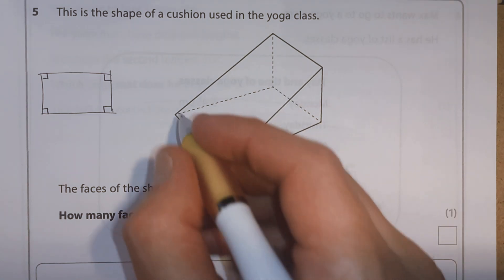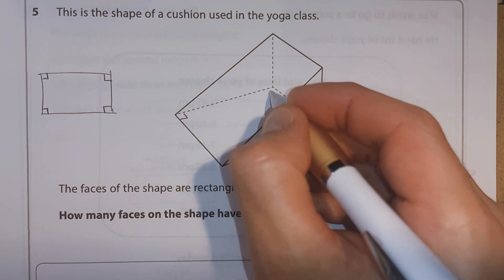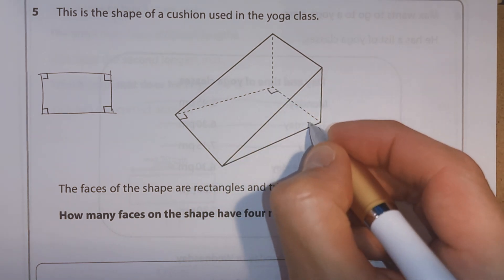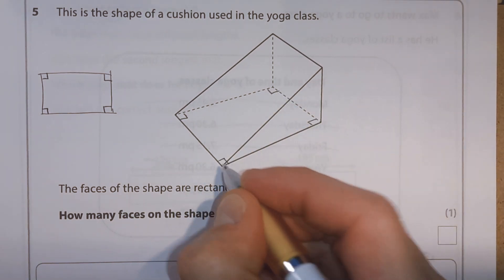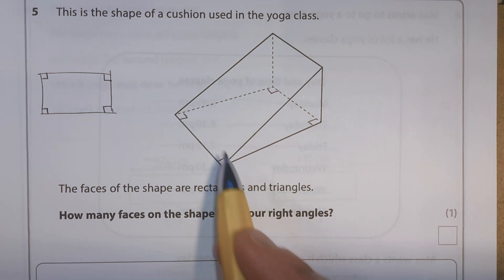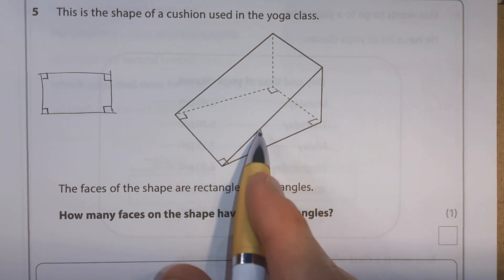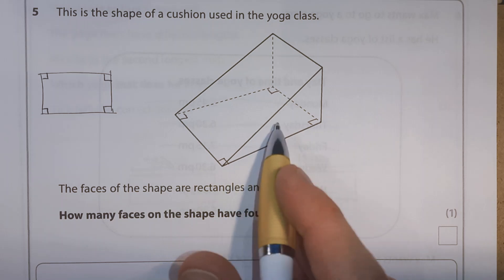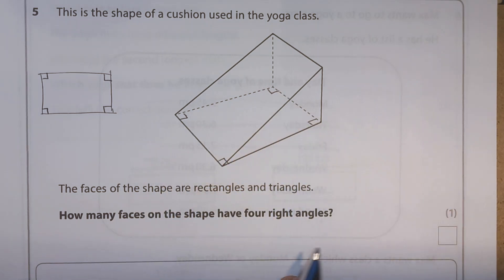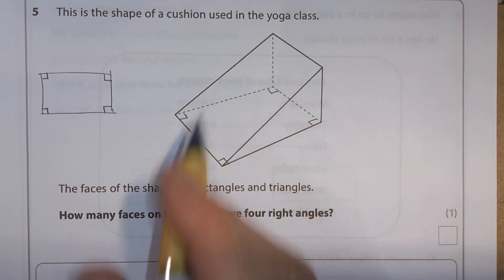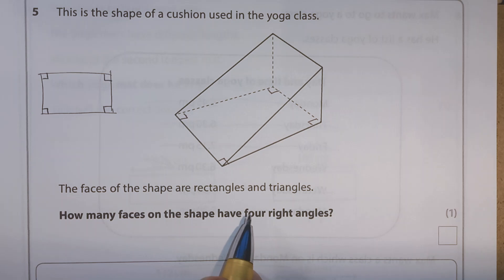Well, this base piece, this rectangle here, is going to have one, two, three, four. They might not all look exactly like right angles, because this is a 3D shape that's drawn. But if you imagine, it would actually be a rectangle to start with, it's just because they've had to draw it this way to make it look 3D and stand out.